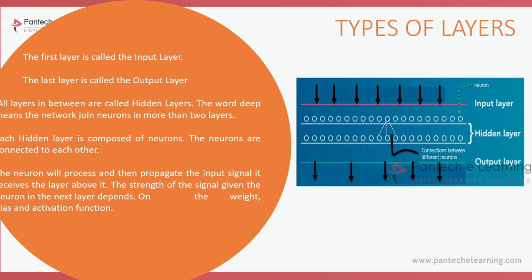The input layer receives the image or data provided. The hidden layer processes it using multiple neurons. The output layer produces the result — but it won't have the same clarity as the original input, because all the scattered and compressed parts are rejoined and displayed as the output.